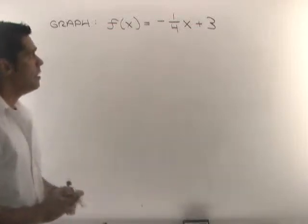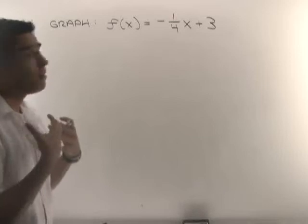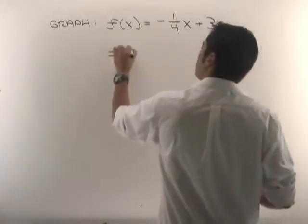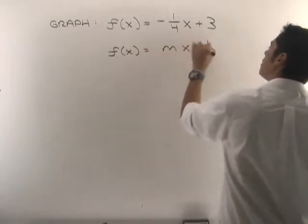Okay, here we're asked to graph a line. Now, we're going to need to recognize ourselves that this is a line, and to do so, we want to notice that this looks like f(x) equals mx plus b.